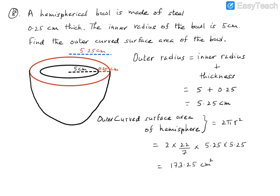We have obtained the outer curved surface area of the hemispherical ball as 173.25 cm². The key here is that we are given the inner radius and the thickness, and we need to find the outer curved surface area. We added the inner radius 5 and the thickness 0.25 to get the outer radius 5.25 centimeters, then applied the hemisphere formula.